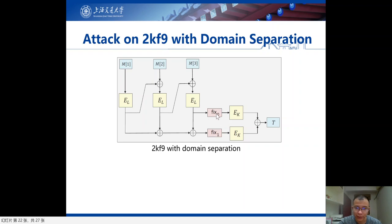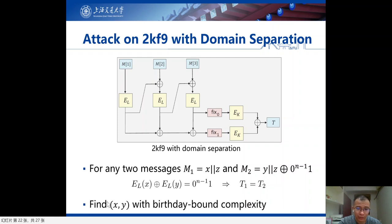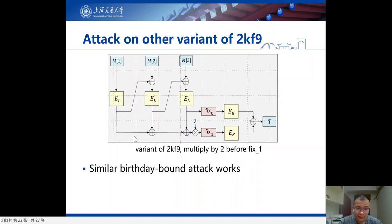We then try to fix 2KF9. Our first attempt is a one-bit domain separation on the last block cipher — fixing the most significant bit of one string to be zero and the other to be one. But we find this domain separation does not work for 2KF9: for any two messages M1 and M2 that are both 2-block messages, if a certain relationship holds between them, then the output tags will collide. We find such a pair requires only birthday bound complexity, so we can use this pair to construct a forgery. If we use a more complicated operation — multiply by two before the one-bit domain operation — a similar birthday bound attack still works.